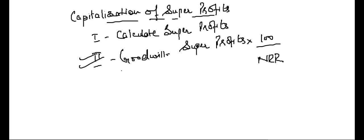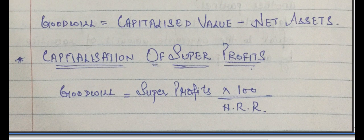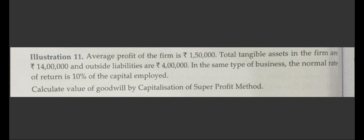I have discussed capitalization of average profits and capitalization of super profits. Capitalization of super profits = super profits × 100 / normal rate of return. Let's see some practical problems. The problem reads: average profit of the firm is 1,50,000. Total tangible assets are 14,00,000 and outside liabilities are 4,00,000. In the same type of business, the normal rate of return is 10% of the capital employed. Calculate value of goodwill by capitalization of super profit method.